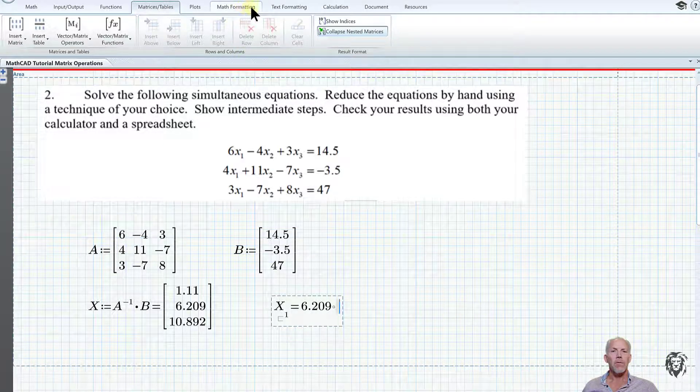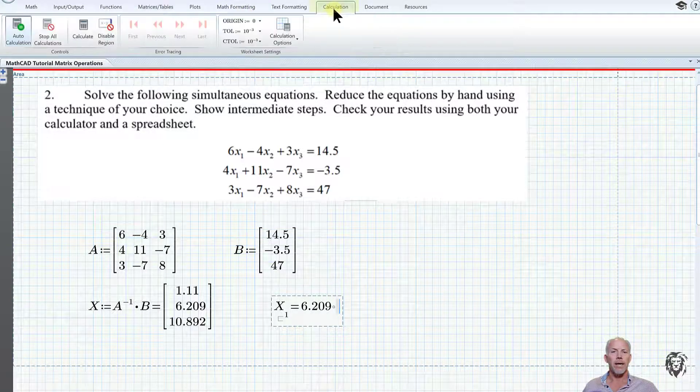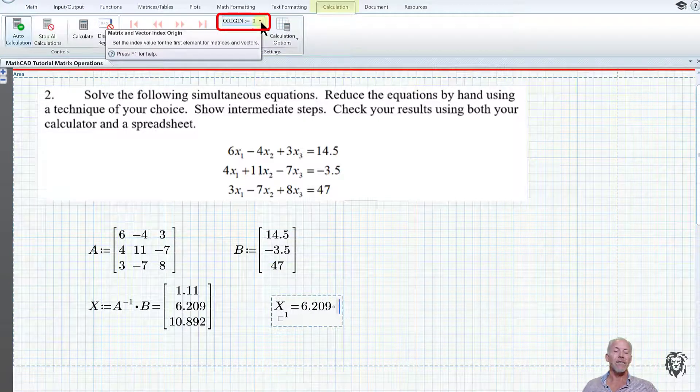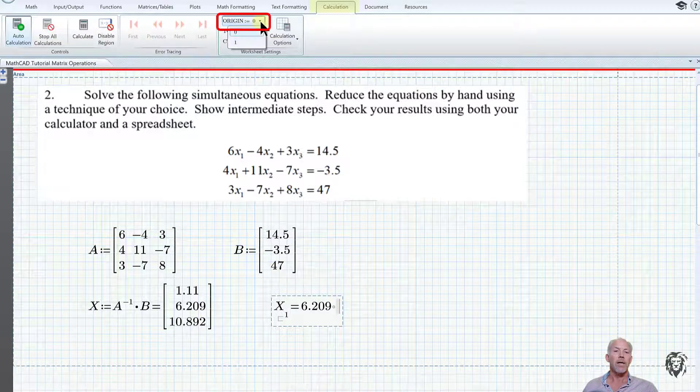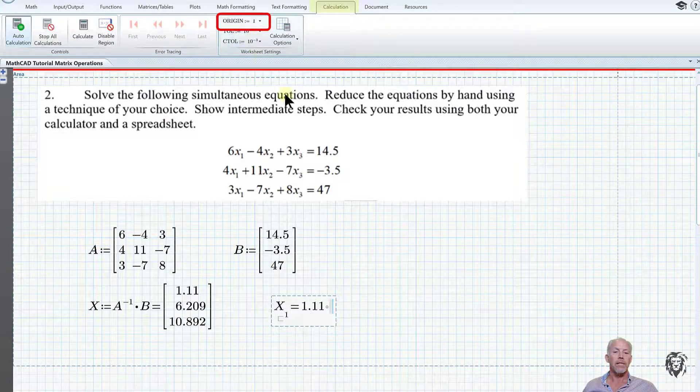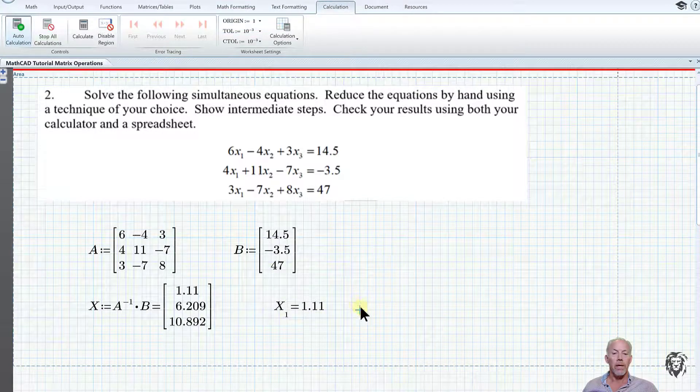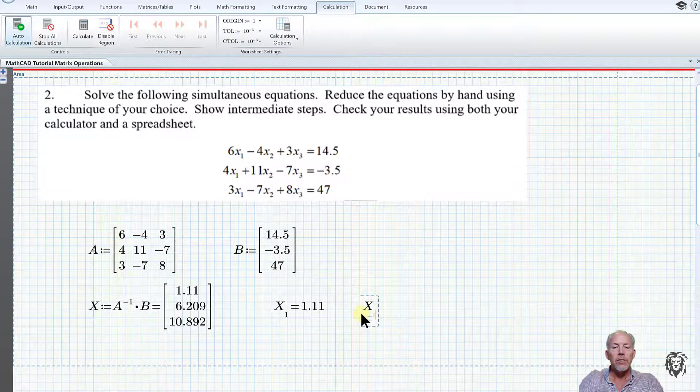I would normally switch my origin, but I left it there so I could show it to you. If we go up to the calculations tab, we see origin is set to zero. That means the indexing of the arrays starts at zero. If we wanted to start at one, we can just switch that. Now you see x1 is equal to 1.11, and we can get the values of x2 and x3.